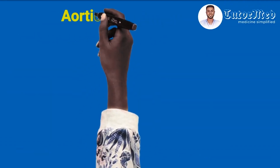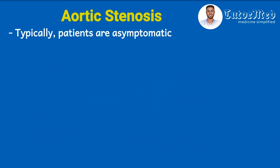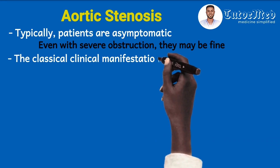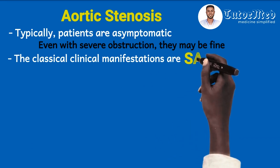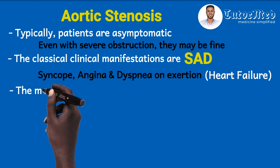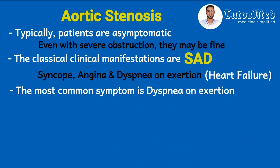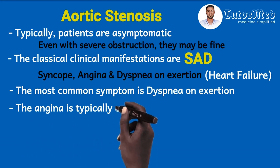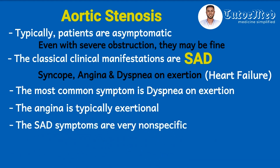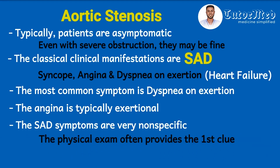For aortic stenosis, patients are typically asymptomatic even with severe obstruction. The classical clinical manifestations of severe aortic stenosis form a triad known as SAD: S for syncope, A for angina, and D for dyspnea on exertion, typically from heart failure. Among the triad, the most common symptom is dyspnea on exertion. When angina is present, it resembles stable angina pectoris and is typically exertional. The SAD symptoms are very non-specific, so physical exam often provides the first clue.